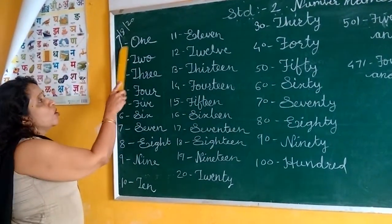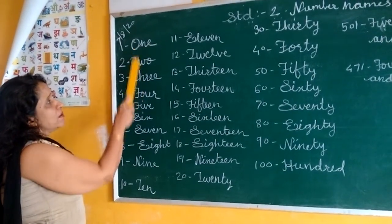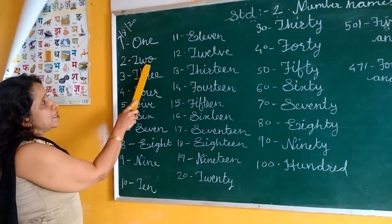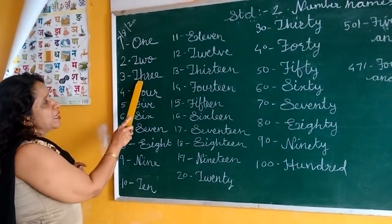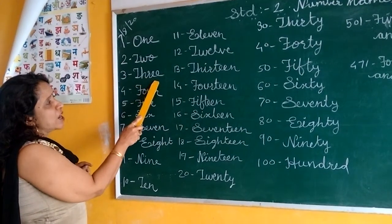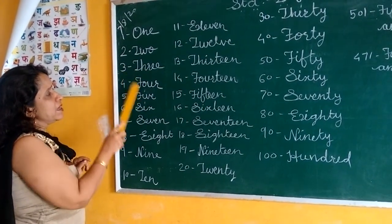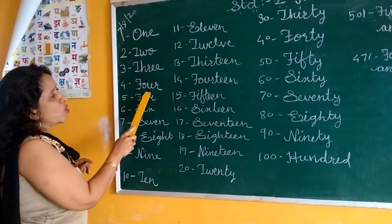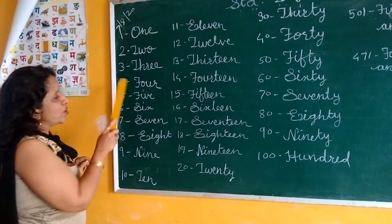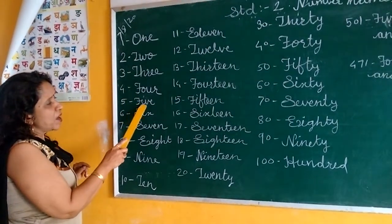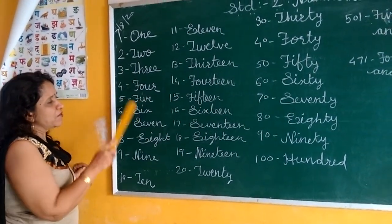Now see: one — O-N-E, 1. T-W-O, 2. T-H-R-E-E, 3. F-O-U-R, 4. F-I-V-E, 5.